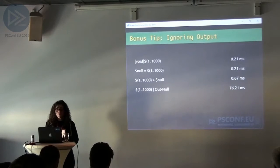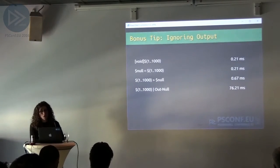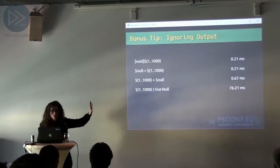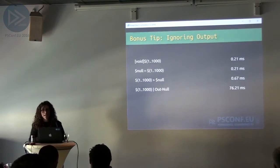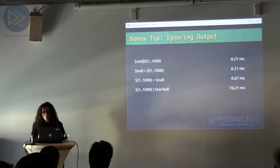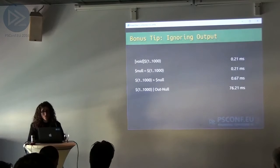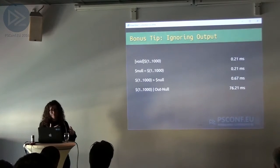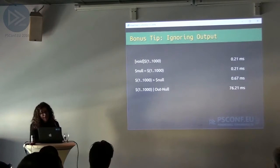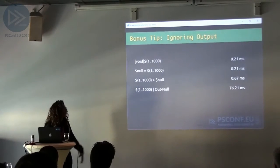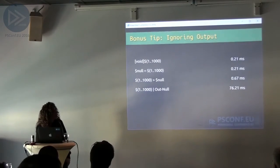Next, ignoring output is really important too. A lot of us pipe to Out-Null. If you void it, it's 0.21 milliseconds. If you do null equals, it's 0.21 milliseconds. If you send it out to null, it's 0.67 milliseconds. If you pipe it to Out-Null, that becomes a massive increase.